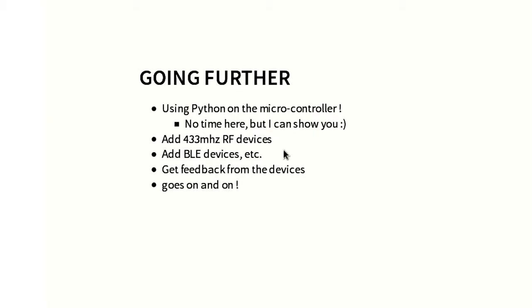It can run on a Raspberry Pi or whatever little device you have. To go further, we can use Python on the microcontroller — it exists with MicroPython and PyMite and others. We can add 433 MHz RF devices that can be connected to your MQTT network with gateways. You can add Bluetooth Low Energy devices for proximity sensing with beacons all over your home. You can get feedback from devices, add loggers and graphs for temperature, air quality, and pollution.